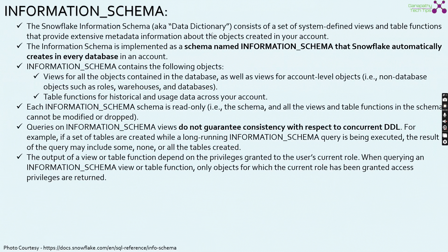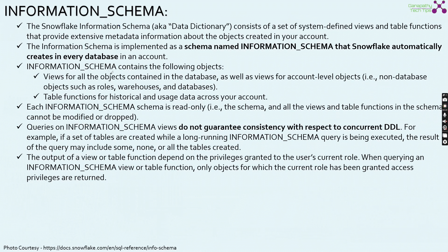Now we are going to discuss the information schema within Snowflake. The information schema, also known as the data dictionary, consists of a set of system-defined views and table functions that provide extensive metadata information about the objects created within your account. The information schema is implemented as a schema named information schema that Snowflake automatically creates in every database in your account. When it comes to account usage, it is created as part of the Snowflake database alone, but the information schema is created within each and every database within Snowflake. It contains views for all objects in the database as well as account-level objects such as non-database objects like roles, warehouses, and databases.